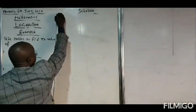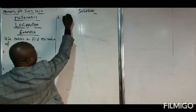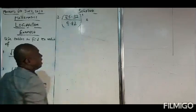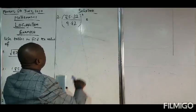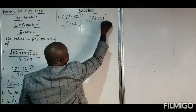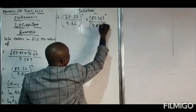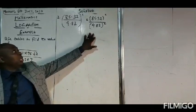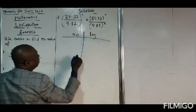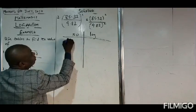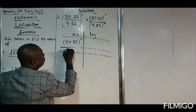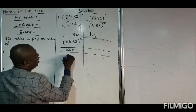Now we are going to look at the solution to Example 2. In Example 2 we have 85.32 over 9.82, all squared. Breaking it into numerator and denominator: the numerator is 85.32 squared, and the denominator is 9.82. We arrange these in our logarithm table — tabulizing: we have 85.32 squared as the numerator and 9.82 as the denominator.